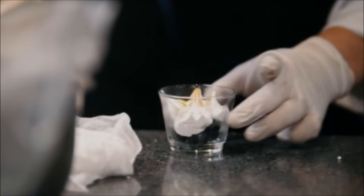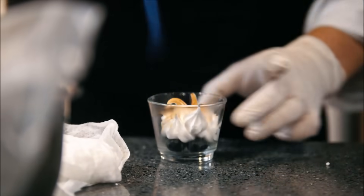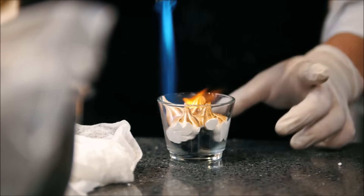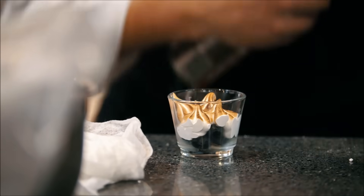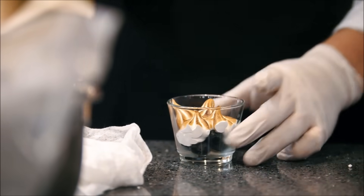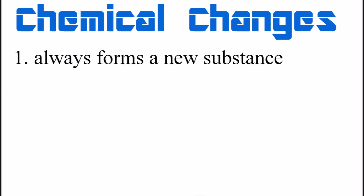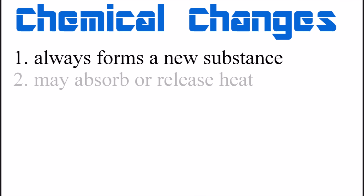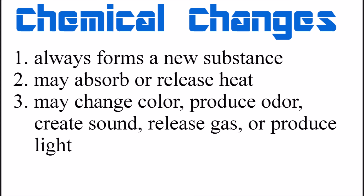Here are some clues to look at if you're not sure whether something is a chemical or physical change. Chemical changes always form a new substance. They may absorb or release heat. Sometimes a chemical change will cause a change in color or produce an odor.